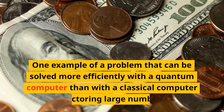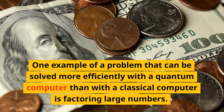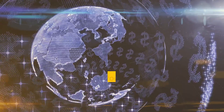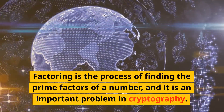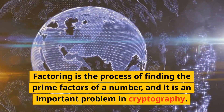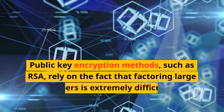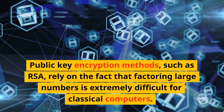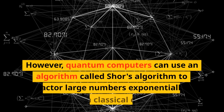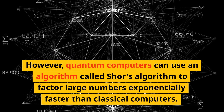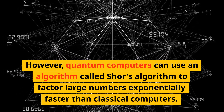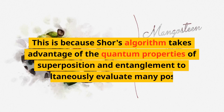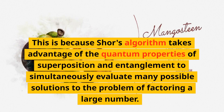One example of a problem that can be solved more efficiently with a quantum computer is factoring large numbers. Factoring is the process of finding the prime factors of a number, and it is an important problem in cryptography. Public key encryption methods such as RSA rely on the fact that factoring large numbers is extremely difficult for classical computers. However, quantum computers can use an algorithm called Shor's algorithm to factor large numbers exponentially faster, by taking advantage of superposition and entanglement to simultaneously evaluate many possible solutions.